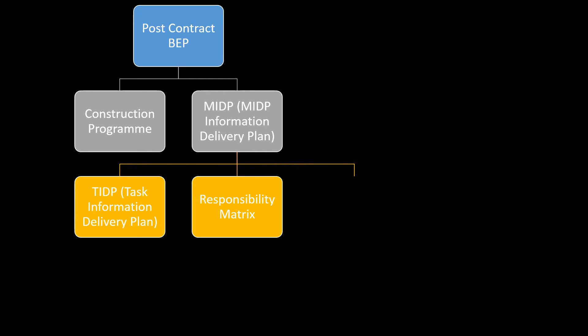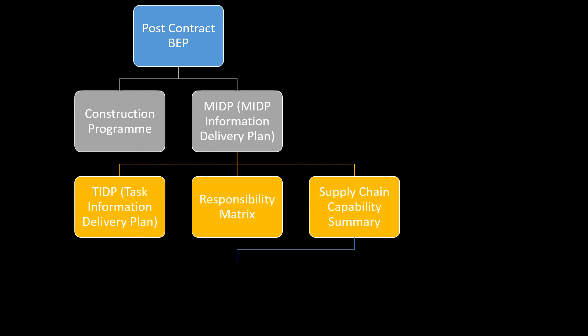Speaking of responsibility, another thing included in the MIDP is the Responsibility Matrix. This Responsibility Matrix contains all of the project team members, the roles associated, and the authorities that they have. The MIDP also contains something called a Supply Chain Capability Summary, which proves to the client and to the contractor that the supply chain — for the material, the machinery, and the manpower — is capable of achieving the BIM objectives set at the start of the project.